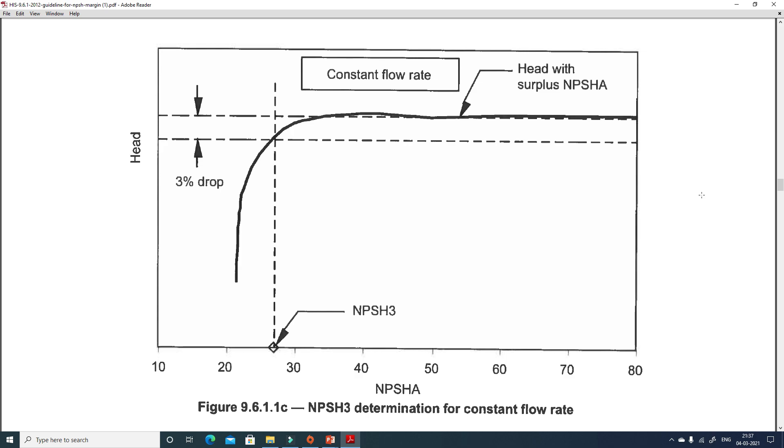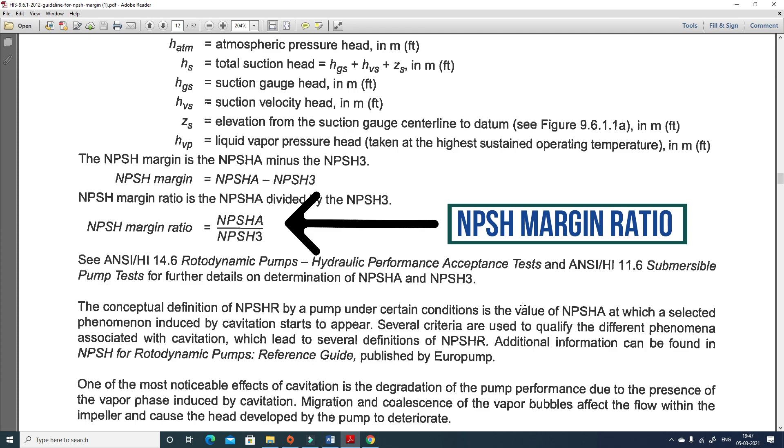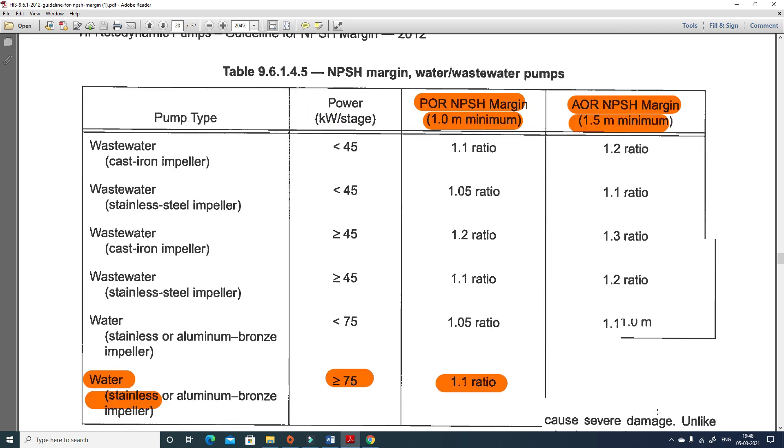The ratio of net positive suction head available and the net positive suction head required is known as NPSH margin ratio. This ratio normally lies between 1.1 to 1.5. As you can see here, NPSH margin ratio depends on multiple parameters like type of pump and its application.